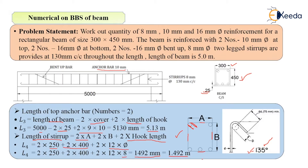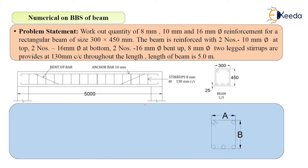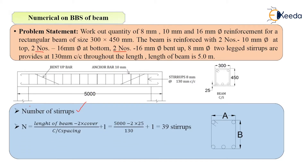We have now calculated the length of all bars: straight main bar, bent up bar, top anchor bars, and stirrups. What remains is the number of stirrups. The formula for number of stirrups is: (length of beam minus two times cover) divided by center-to-center spacing, plus 1. That is: (5000 minus 2 times 25) divided by 130, plus 1. This gives 39 stirrups.